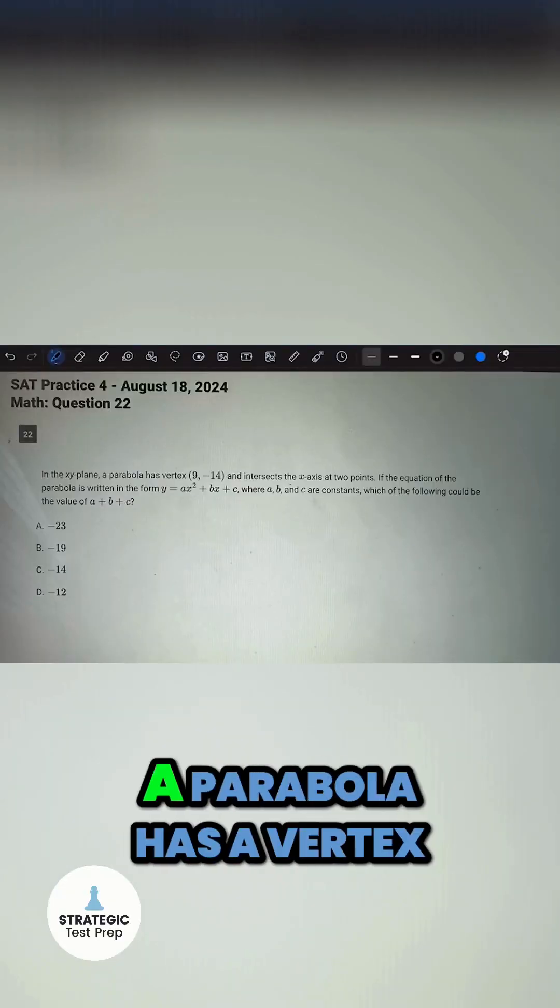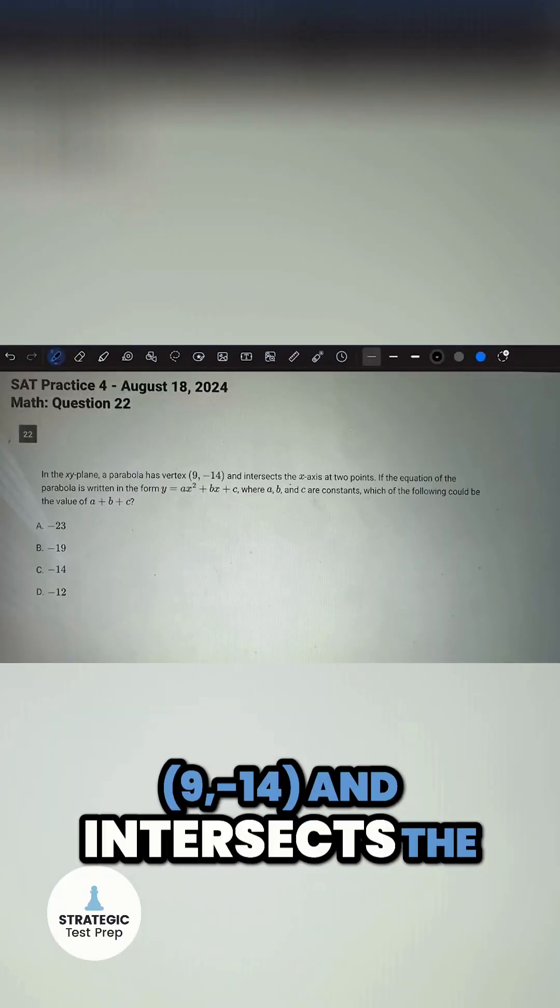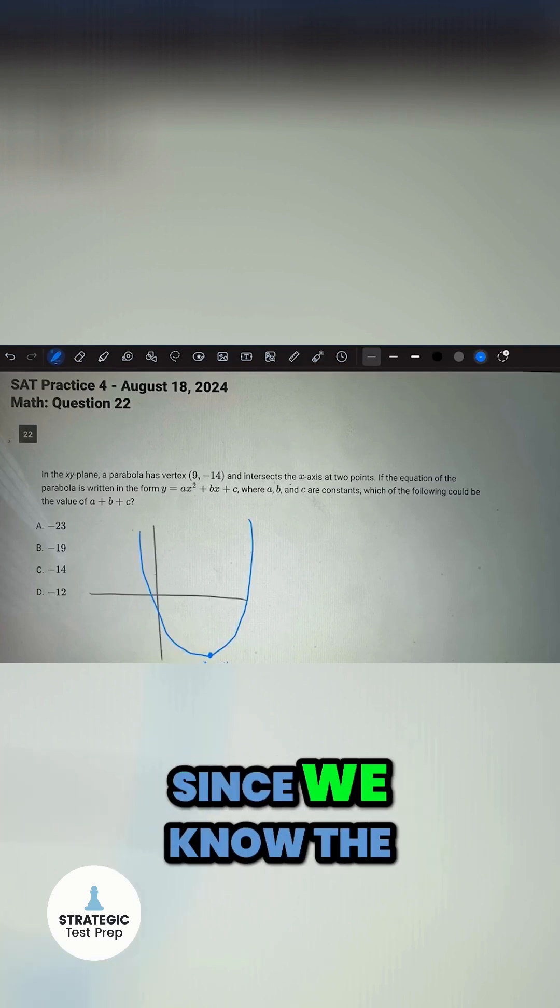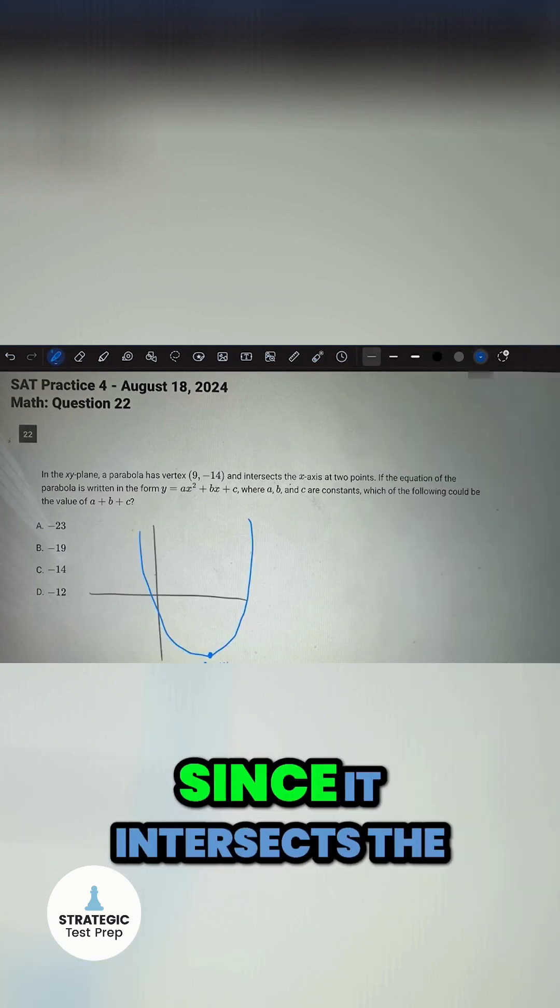Let's do it. In the xy-plane, a parabola has a vertex (9, -14) and intersects the x-axis at two points. Since we know the parabola is upward facing because it intersects the x-axis at two points,